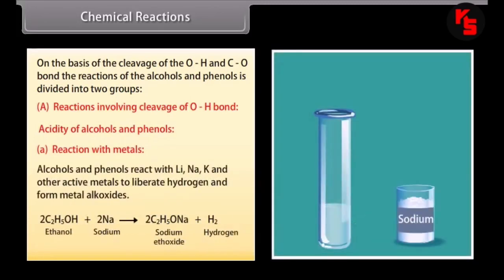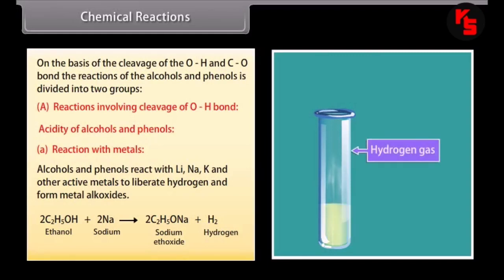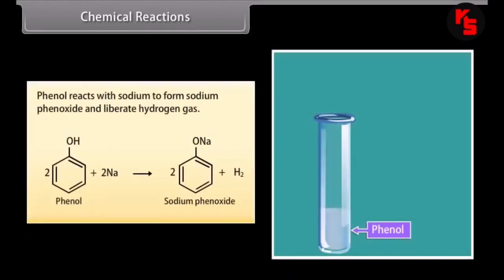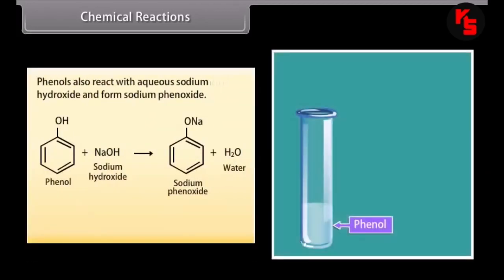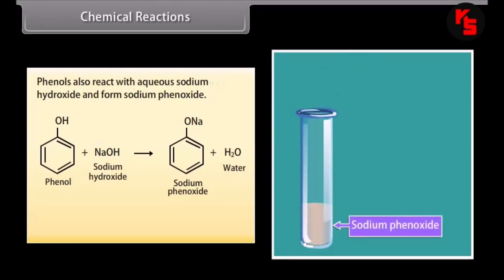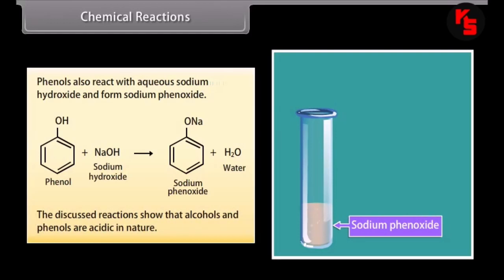Acidity of alcohols and phenols — reaction with metals: alcohols and phenols react with lithium, sodium, potassium and other active metals to liberate hydrogen and form metal alkoxides. Phenol reacts with sodium to form sodium phenoxide and liberate hydrogen gas. Phenols also react with aqueous sodium hydroxide to form sodium phenoxide. These reactions show that alcohols and phenols are acidic in nature.